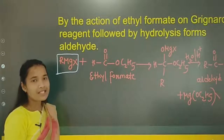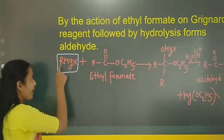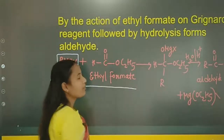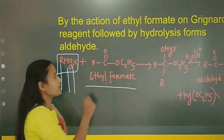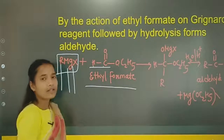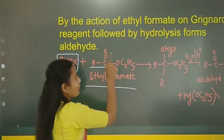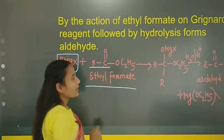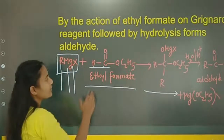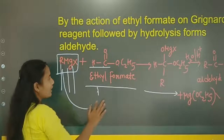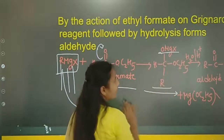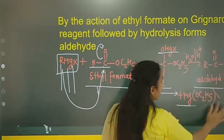In the general reaction, RMgX — that is alkyl magnesium halide, where R is the alkyl group, Mg is the metal, and X is the halide group — reacts with ethyl formate. The formula for ethyl formate is HC(=O)-OC2H5. The alkyl group attacks this carbon, and on hydrolysis it gives an aldehyde along with the remaining product.